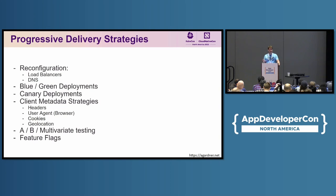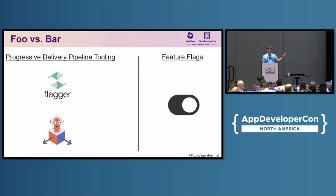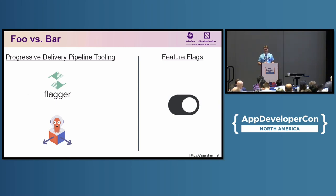And then we've got feature flags. Everything else on this list you can do — it might not be nice to do — but you could do it with duplication. And then, kind of separately, we've got feature flagging.